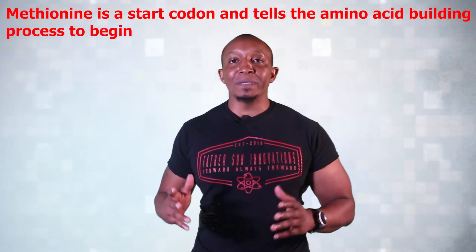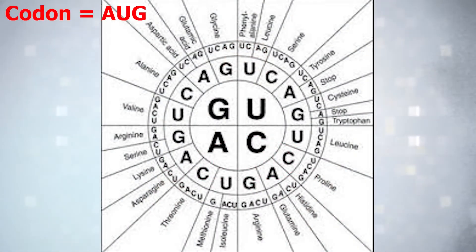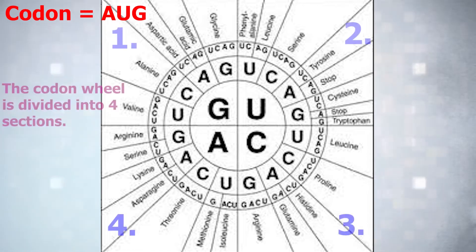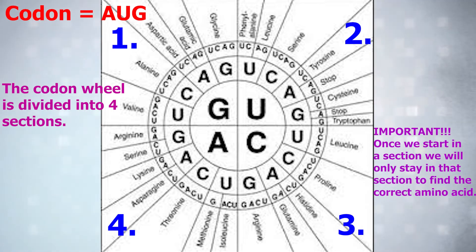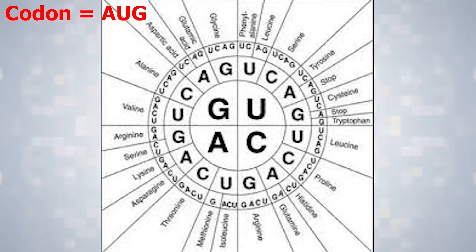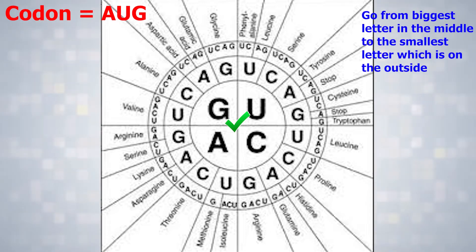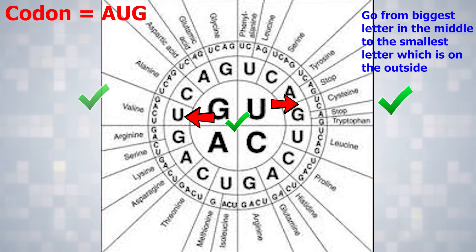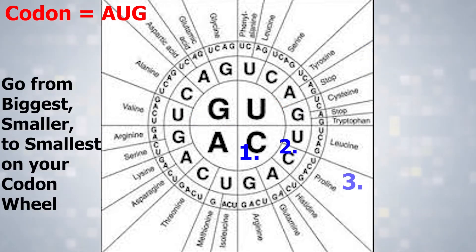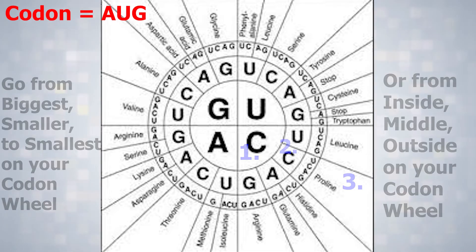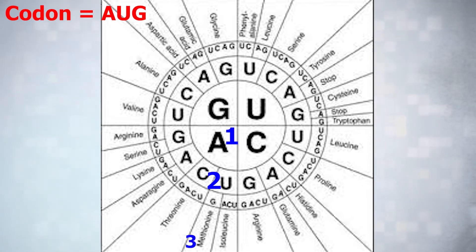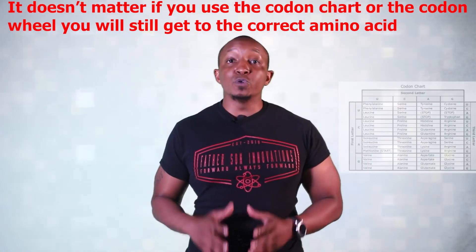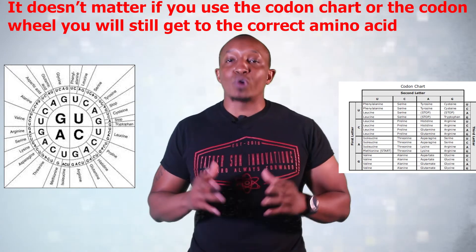Methionine is a start codon and tells the amino acid building process to begin. Now let's use our codon wheel for AUG. The codon wheel is divided into four sections — draw a line where the sections are. Once you start in a section, you stay in that section to find the correct amino acid. Go from the biggest letter in that section, which is in the middle, and work your way out to the smallest letter, which is farthest outside — from inside, to middle, to outside. So we start with A on the inside, move out to U in the middle, and then to G on the outside. Notice that our amino acid is still methionine, so it doesn't matter if you use the codon chart or the codon wheel — you will still get to the correct amino acid.